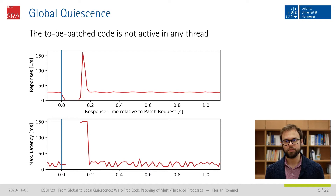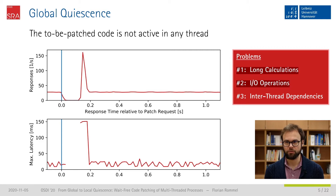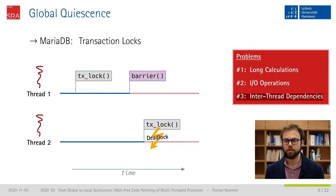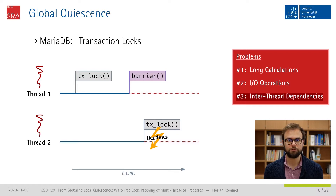So we see after the patch request the performance decreases until a complete halt — pretty bad. The reasons for this are long-running calculations which prevent threads from reaching the barrier, and of course also IO operations which may even be unbounded. An additional problem is inter-thread dependencies which can lead to complete deadlocks. We do not observe this in OpenLDAP, but in MariaDB where threads take locks during database transactions. These three problems make global quiescence bad for performance and also difficult to get right for the developer.